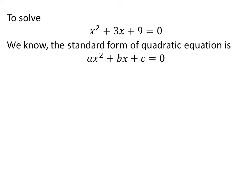We know the standard form of a quadratic equation is ax² + bx + c = 0, where a, b, and c are constants.